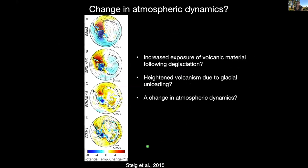Finally, we have to invoke some change in atmospheric dynamics. Eric Steig published a paper in 2015 in GRL where they conducted climate simulations after removing the West Antarctic ice sheet — simulating a change in topography and examining what happens to surface temperatures and surface wind directions when you collapse an ice sheet. They used four different models, and the main finding is that removing the West Antarctic ice sheet produces significant variations in surface temperatures and surface wind directions. So it's plausible that variations in ice sheet extent could alter atmospheric dynamics to a peripheral portion of the East Antarctic ice sheet.